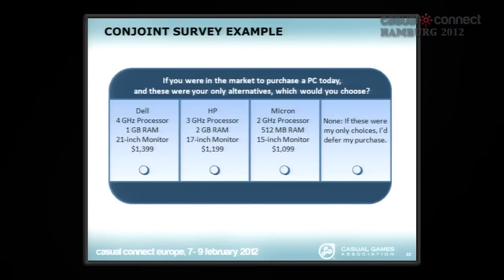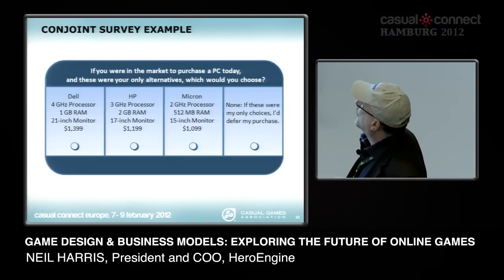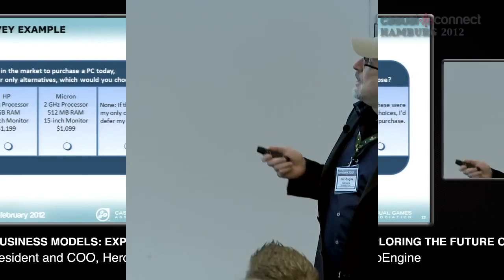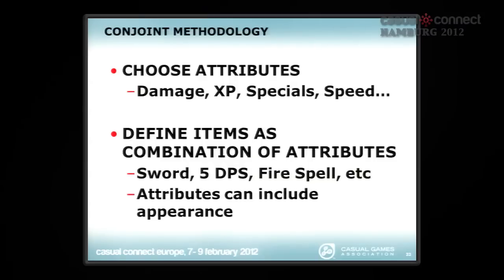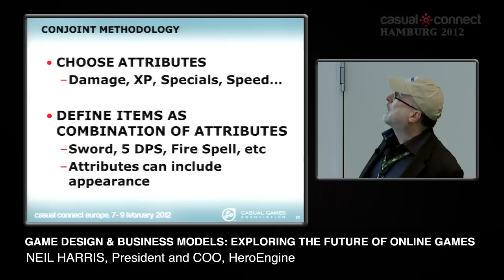Here's an example of how to do conjoint. You ask somebody to take a survey — or in a game you could actually say, would you like to buy this or this? But make them pick one or the other; don't let them say, I want all five of these things. Here's an example in the computer industry: you have brand name as the first characteristic, the speed of the processor, the amount of memory, the size of the monitor, and a price point — all separate factors. You ask people which of these they want, or none of the above. In a game you could choose a set of attributes: how much damage something does, how much XP you get, whatever it might be — and define an item as a combination of attributes.